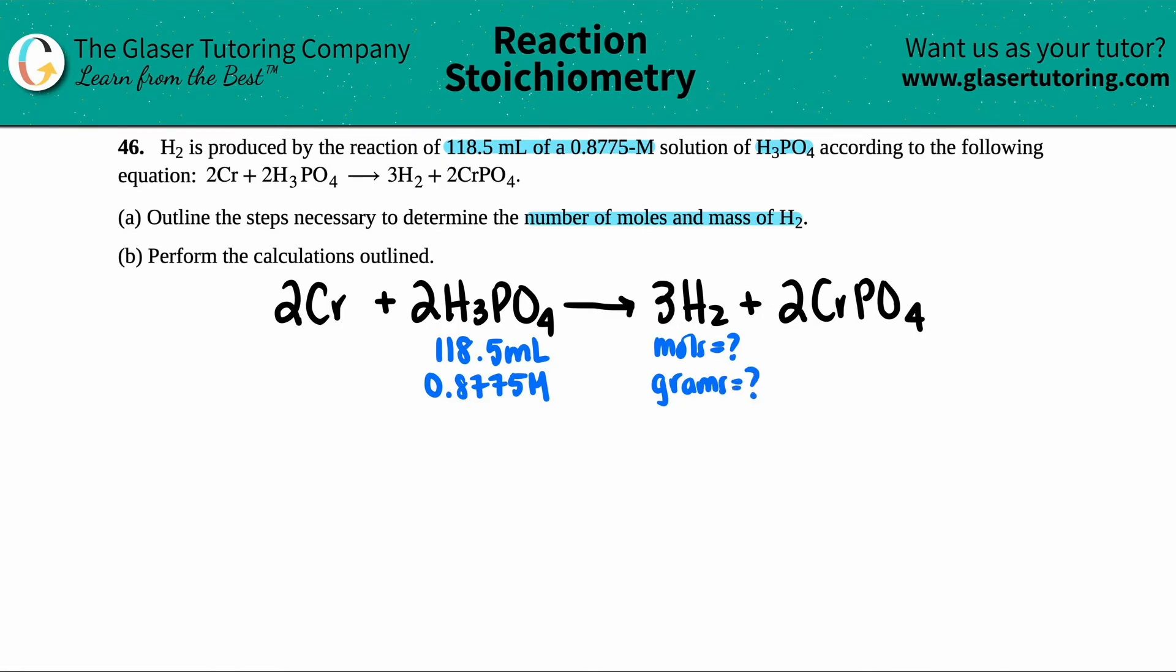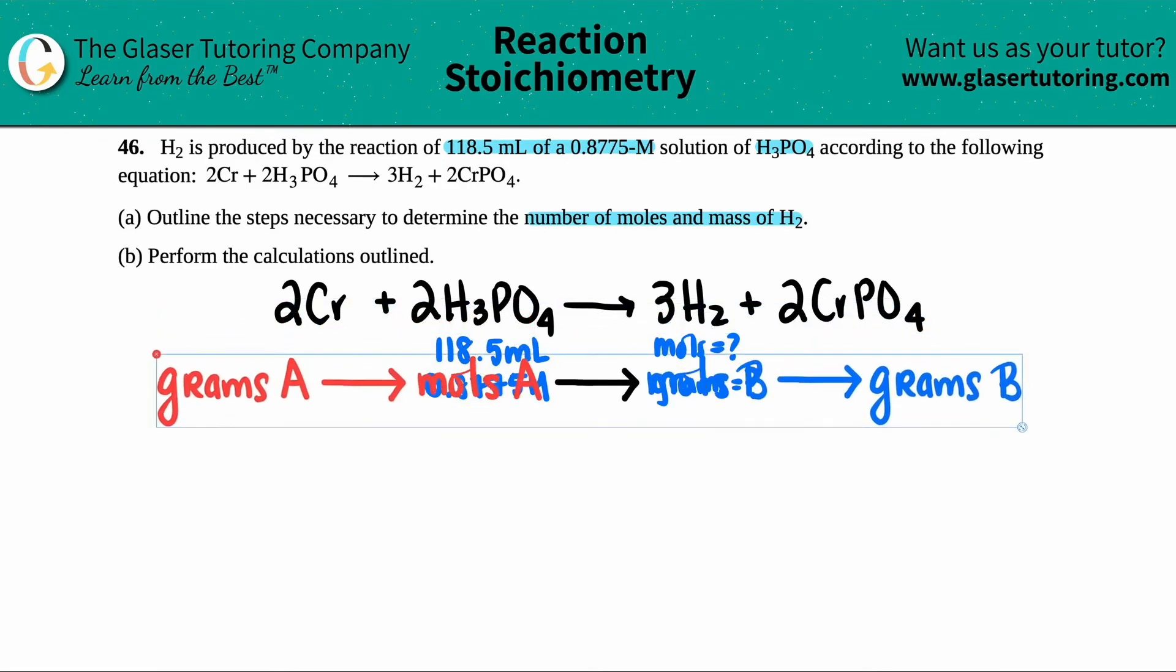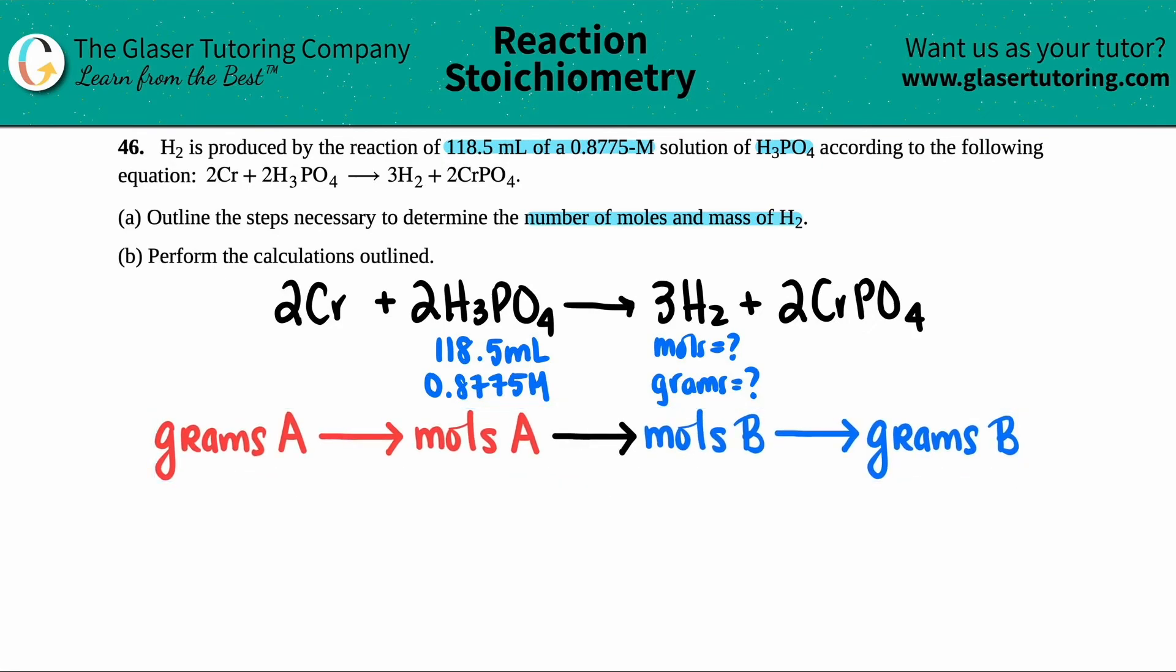When we see this, they gave us a balanced equation. We have information on one compound, and we're looking for information of another compound through a balanced equation. This is stoichiometry. Now, the general flow of the stoichiometry problems is shown as this. I know it as grams to moles to moles to grams. I color coded it for you guys. The red is for everything that was given to you. This is usually the starting material.